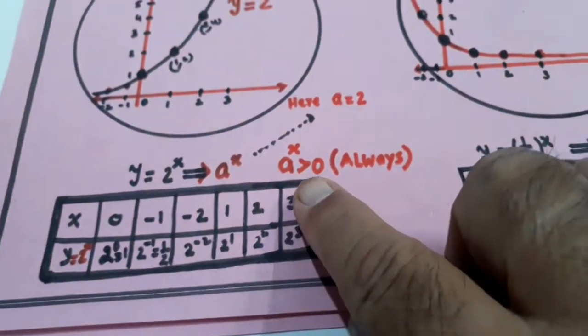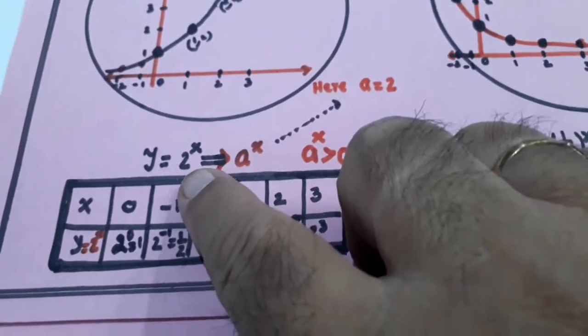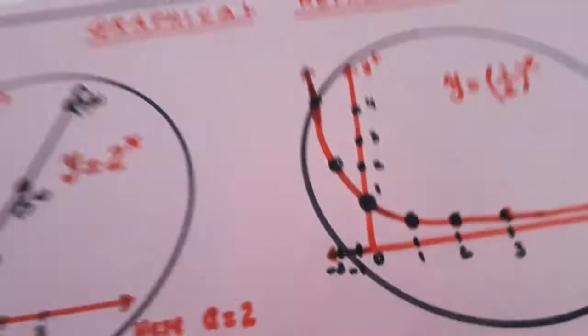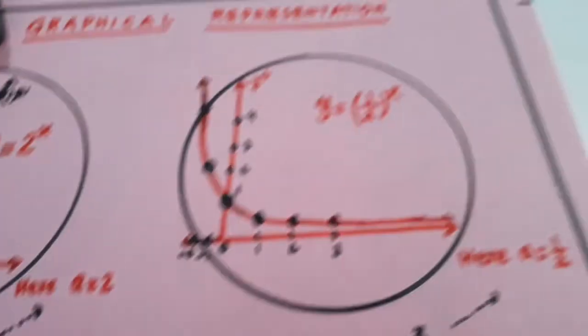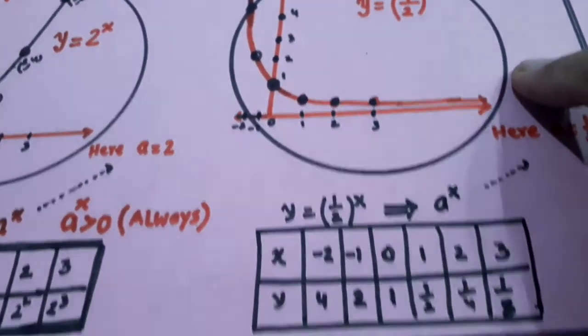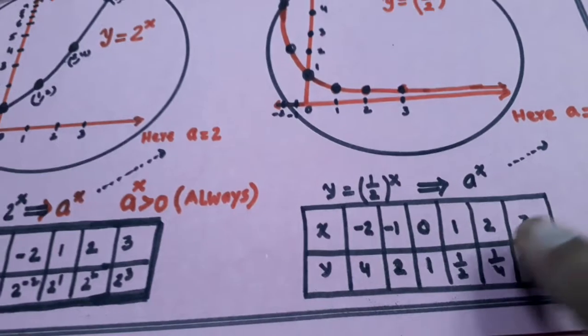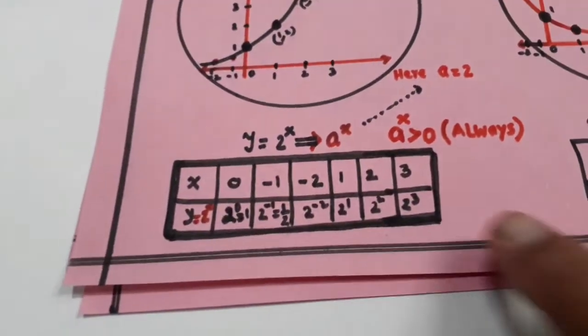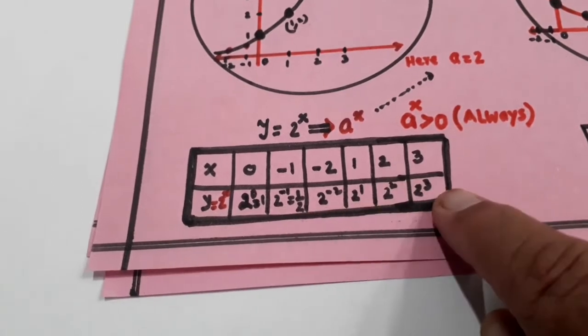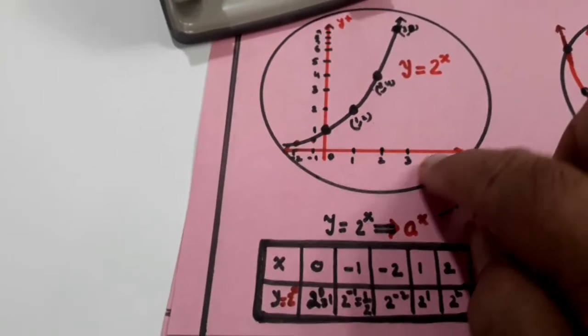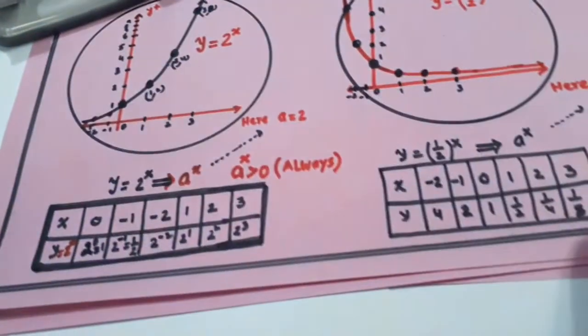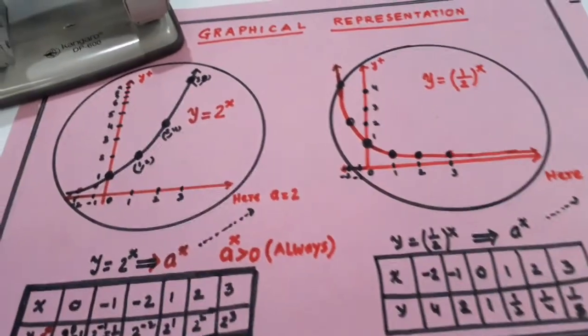If value of a here is more than 1, it is 2. If a value is 1 by 2, the graph will turn the other way. When x is increasing, y is also increasing in one case. Look, in both cases y is positive, y is positive.